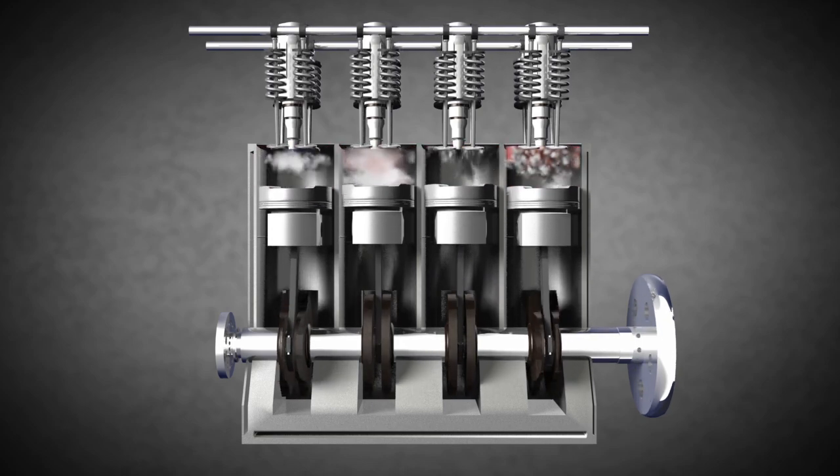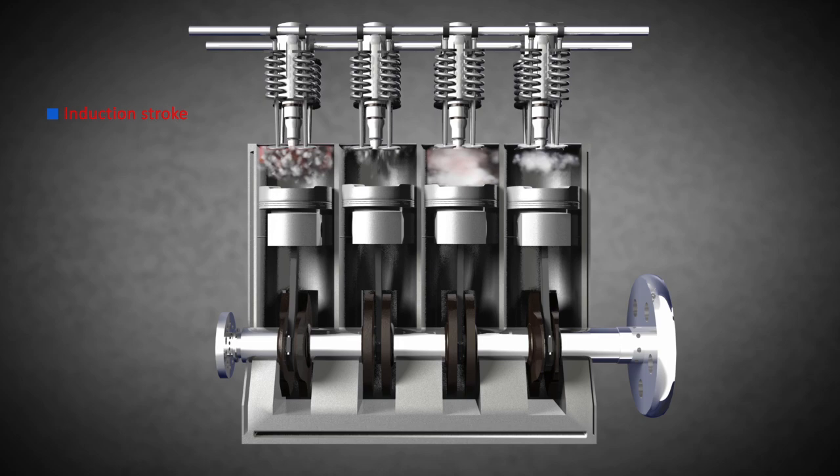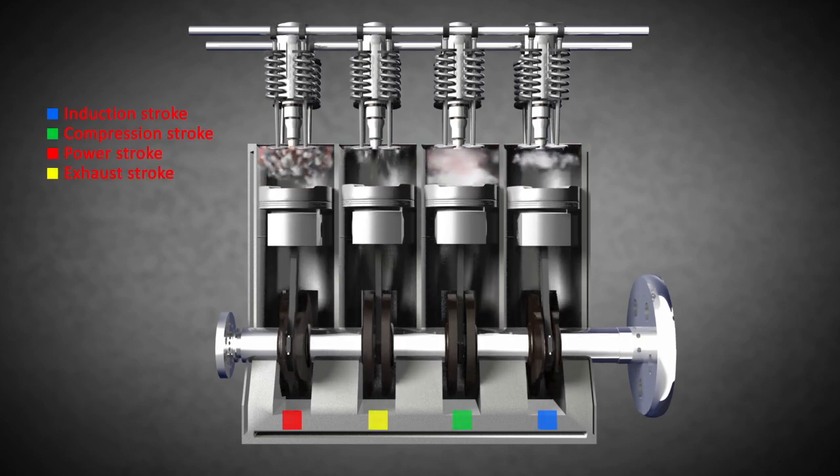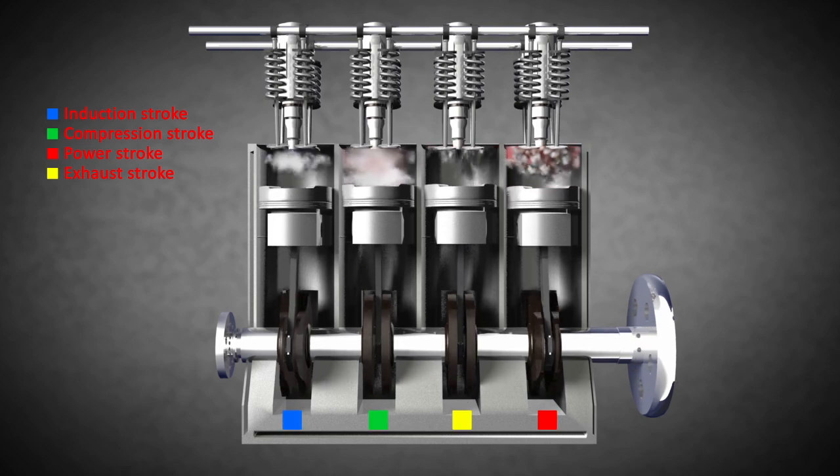A four-stroke diesel engine has the same strokes as an Otto-cycle engine: induction stroke, compression stroke, power stroke, and exhaust stroke.